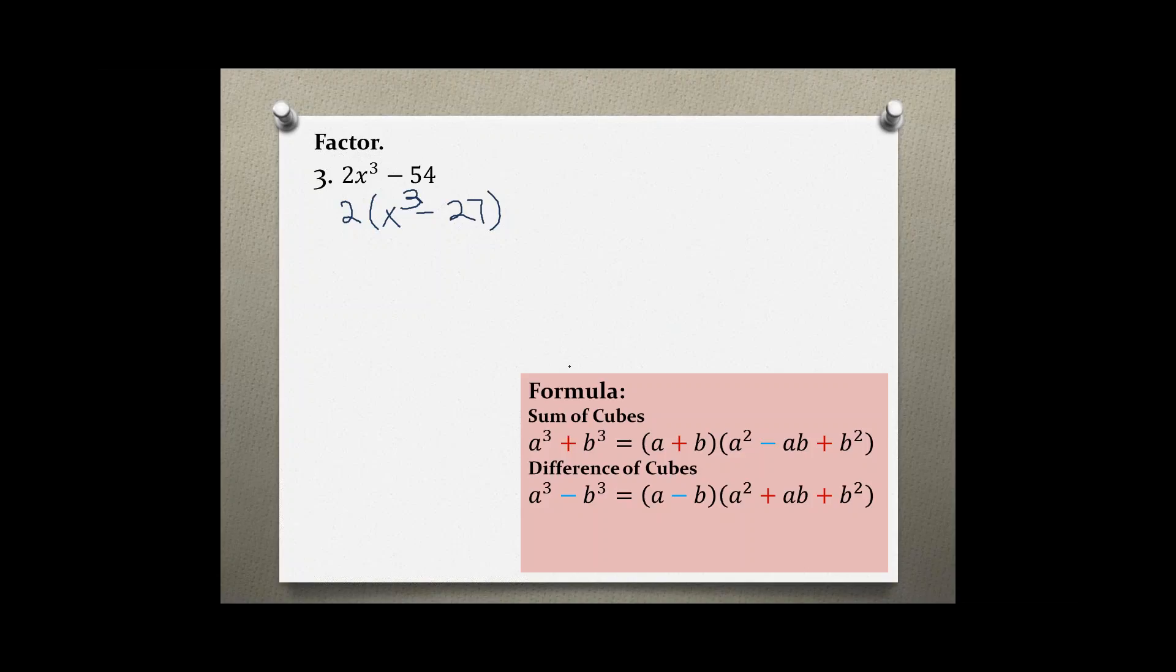Because of this negative sign, I am dealing with the second version. So I have a³ - b³ = (a - b)(a² + ab + b²). So minus, plus, plus.